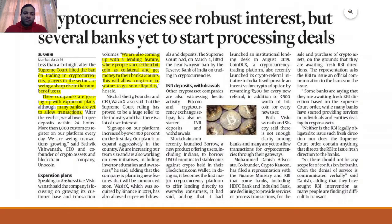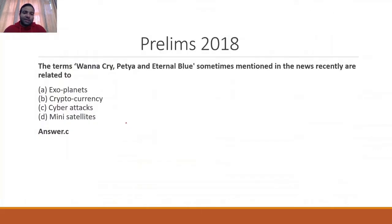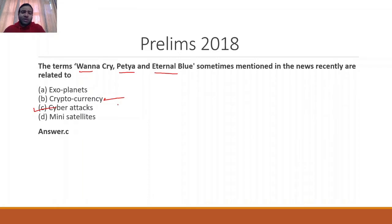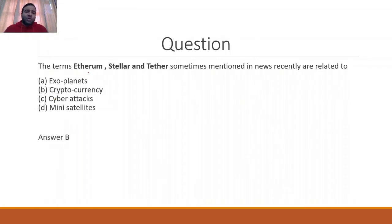The first article is on cryptocurrency. RBI had put restrictions on cryptocurrency, and the Supreme Court has removed those restrictions. In the 2018 prelims, a term-based question included WannaCry, Petya, and EternalBlue. Now a similar question can be framed around cryptocurrency — for example: Ethereum, Stellar, or Tether, sometimes mentioned in the news, are related to what?